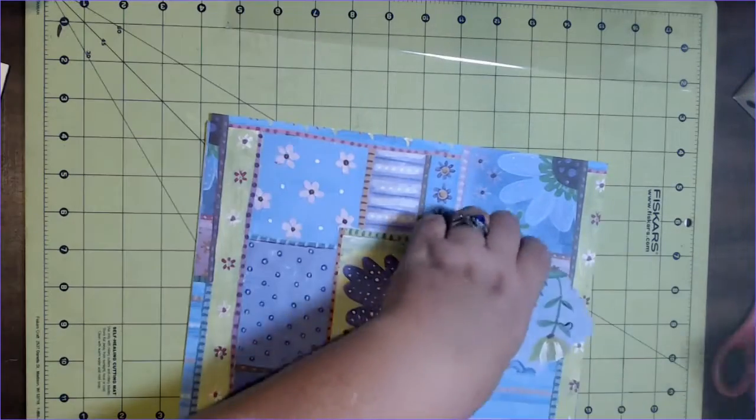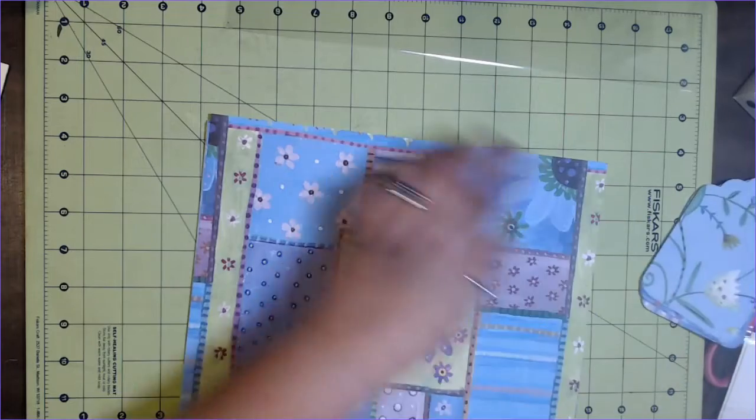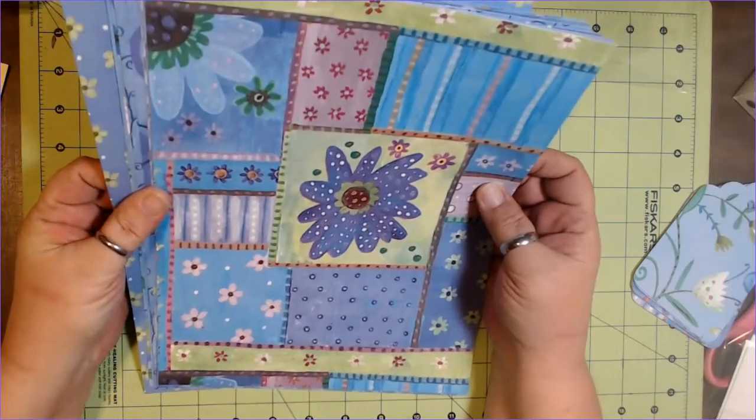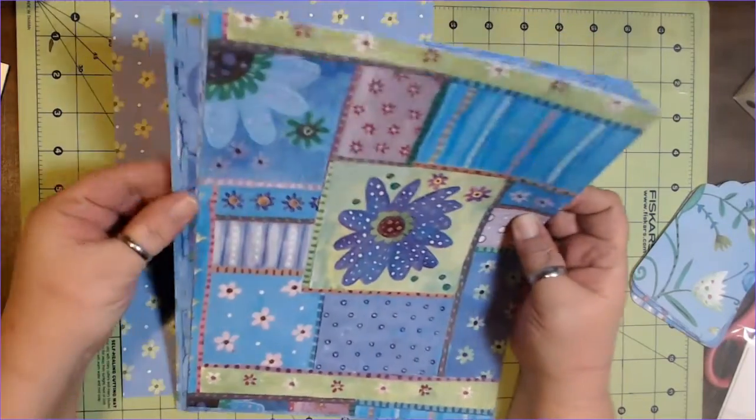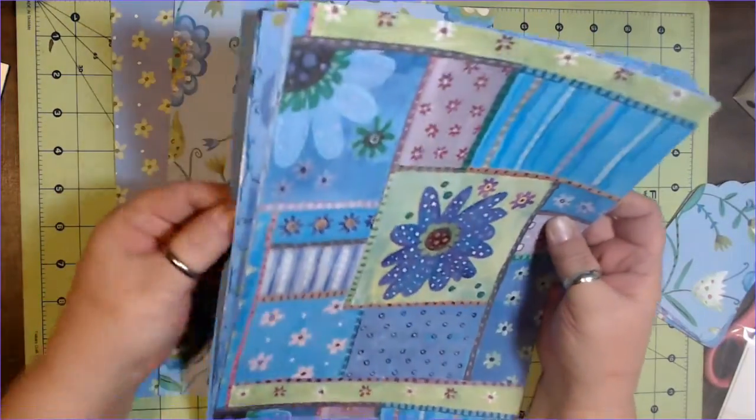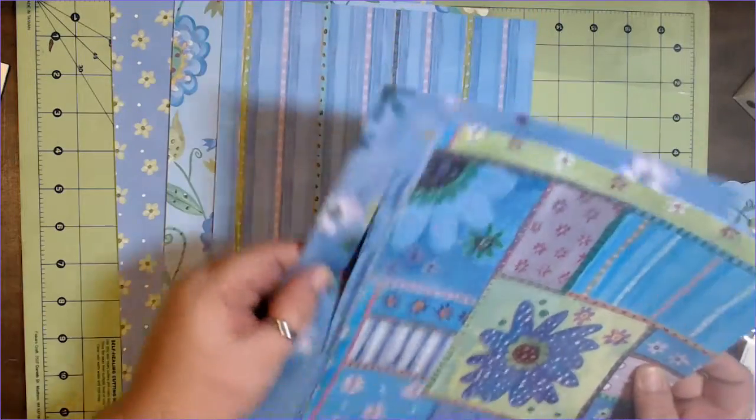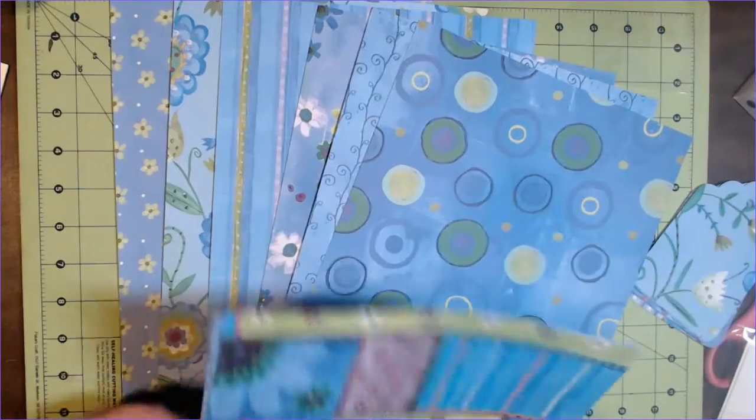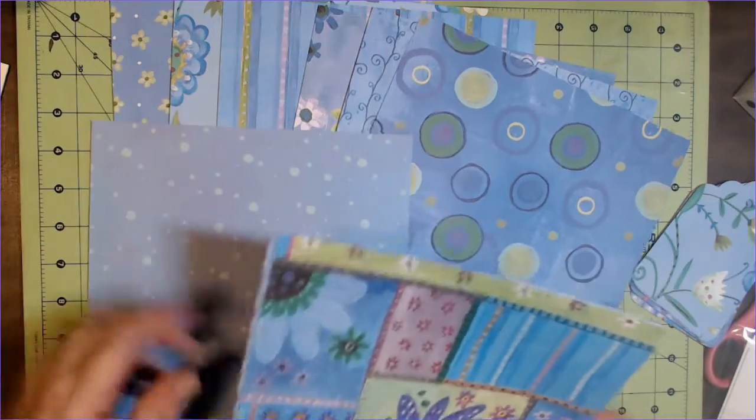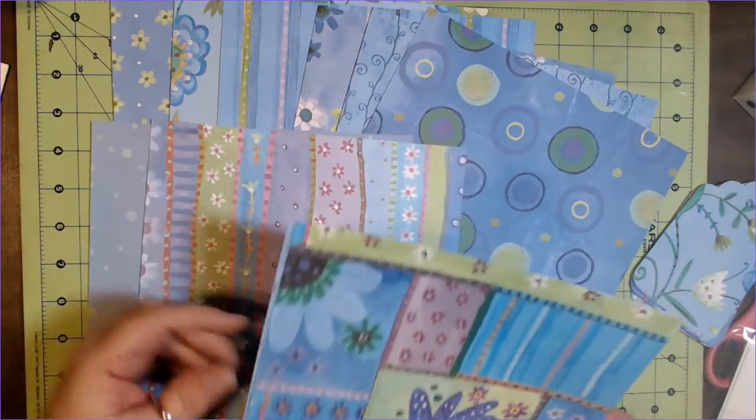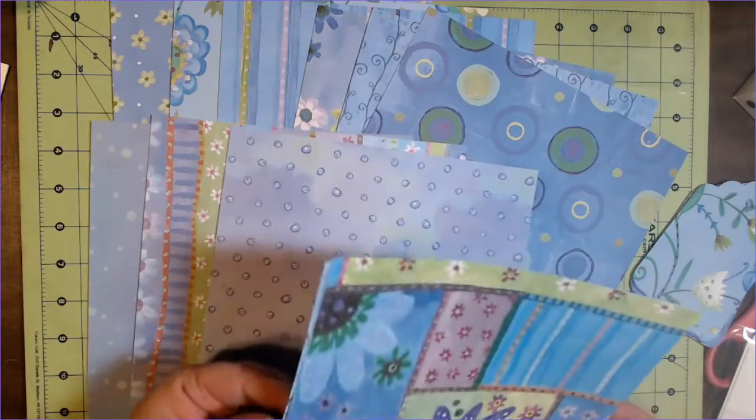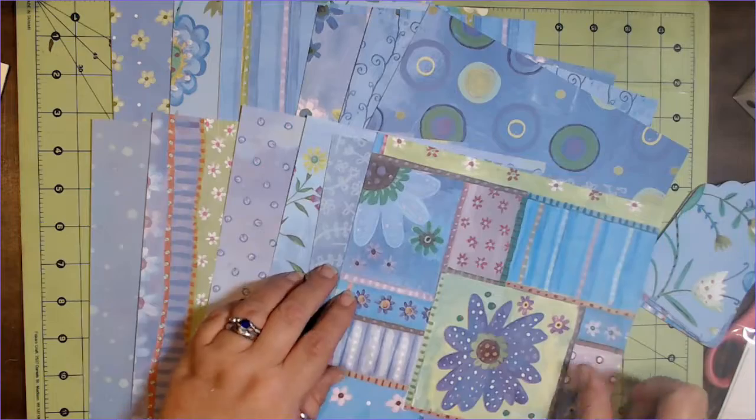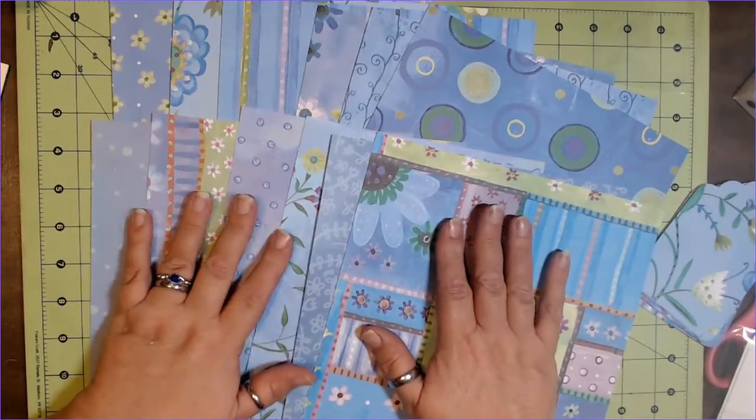Alrighty, so let's start with the base. What do you get? Well, you get at least 12 sheets of 8 and a half by 11. So we got 1, 2, 3, 4, 5, 6, 7, 8, 9, 10, 11, and 12.